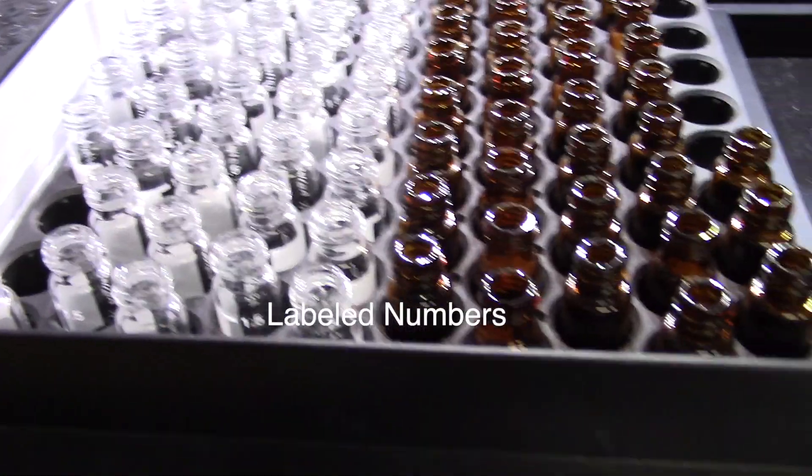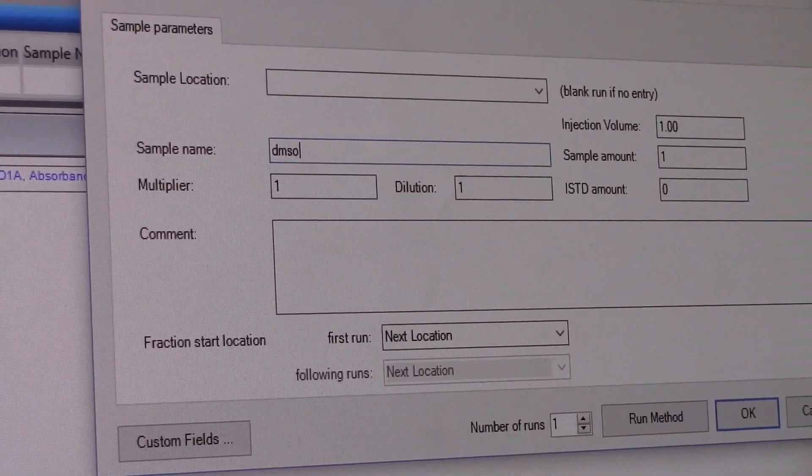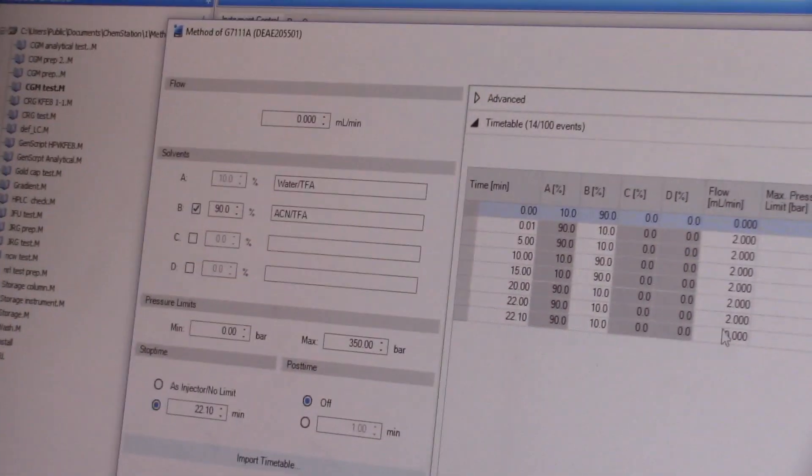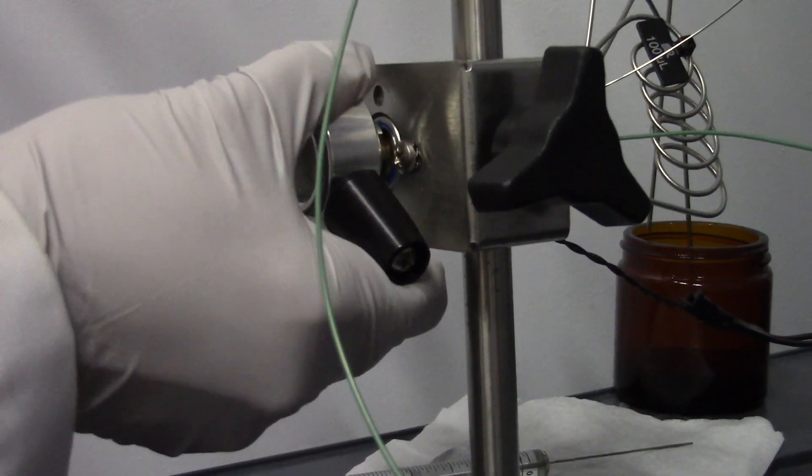You must now rinse the column. It's crucial to clean the HPLC to prevent any gunk getting stuck in the column. The easiest way to do this is to run the exact same method but without your sample. You can either inject the solvent you used previously or you can simply run it without anything.